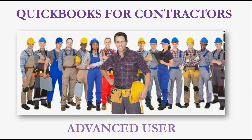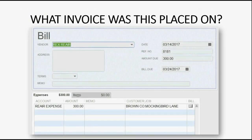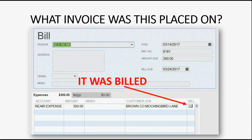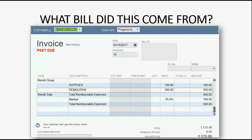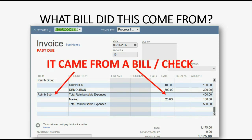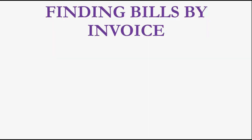Would you like to use your advanced QuickBooks skills to find the most important information in your QuickBooks file? Can you look at this bill and figure out what invoice it was placed on? It must have been placed on some invoice because there's a little invoice picture instead of a check mark in the billable column. That's the same question as asking what bill or check did the charges on this invoice come from? You can see the charges, but there's no way to find what bill it came from. That's why you need to watch the rest of this video.